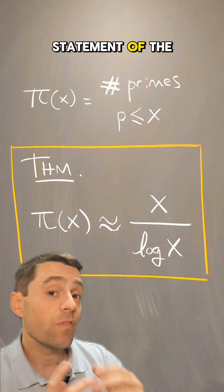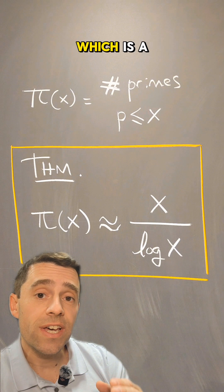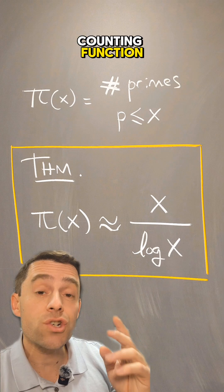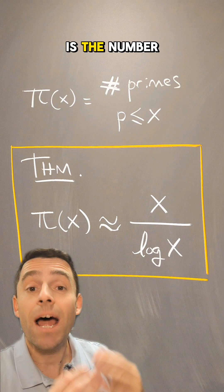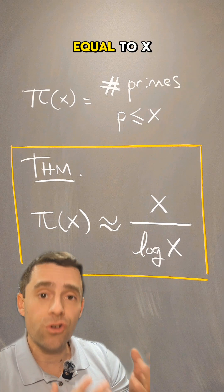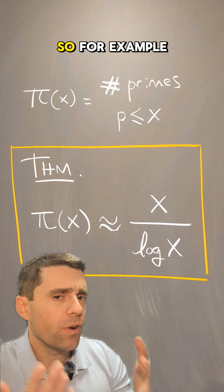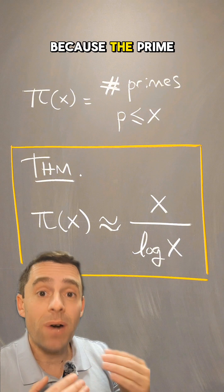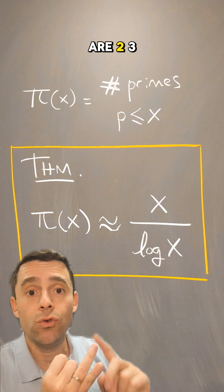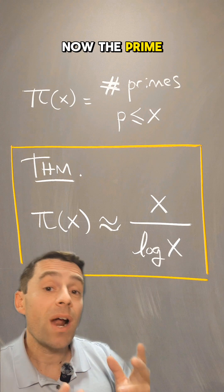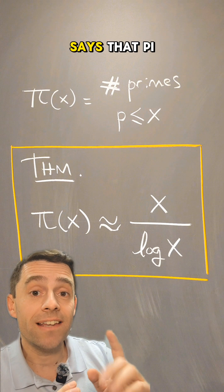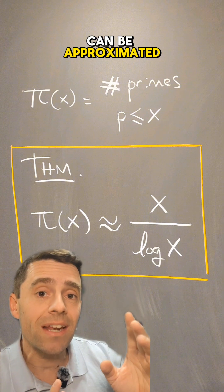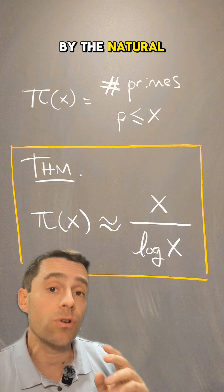This is the statement of the prime number theorem, which is a theorem about the prime counting function. The prime counting function pi of x is the number of primes that are less than or equal to x. For example, pi of 10 will be 4, because the prime numbers below 10 are 2, 3, 5, and 7. The prime number theorem roughly says that pi of x, the prime counting function, can be approximated by x divided by the natural log of x.